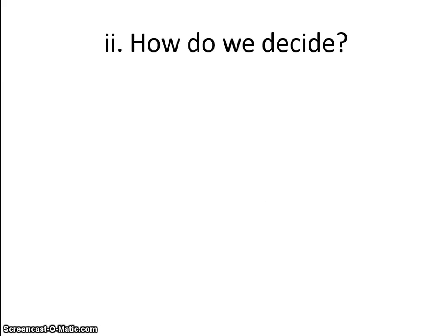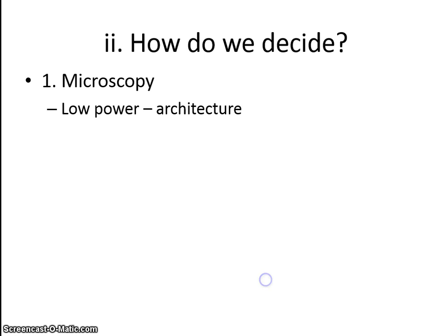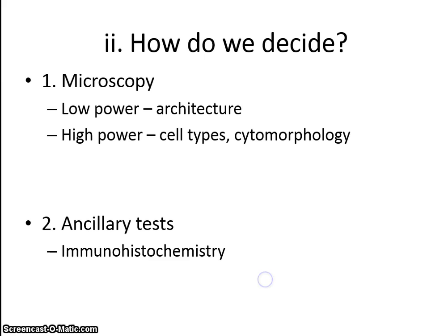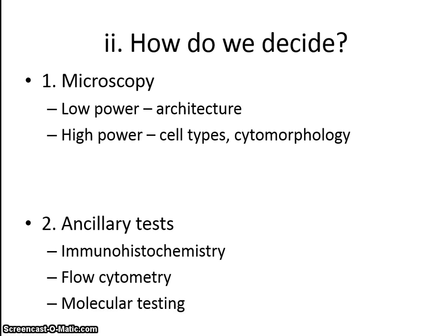Now how does the pathologist decide? Well, it starts with microscopy, and we always begin with low power to assess the architecture. We then move on to high power, where we want to look at the types of cells, the cell size, and the appearance of the cells, or cytomorphology. Following microscopy, we may do some ancillary tests, including immunohistochemistry, sometimes flow cytometry, and occasionally molecular testing.